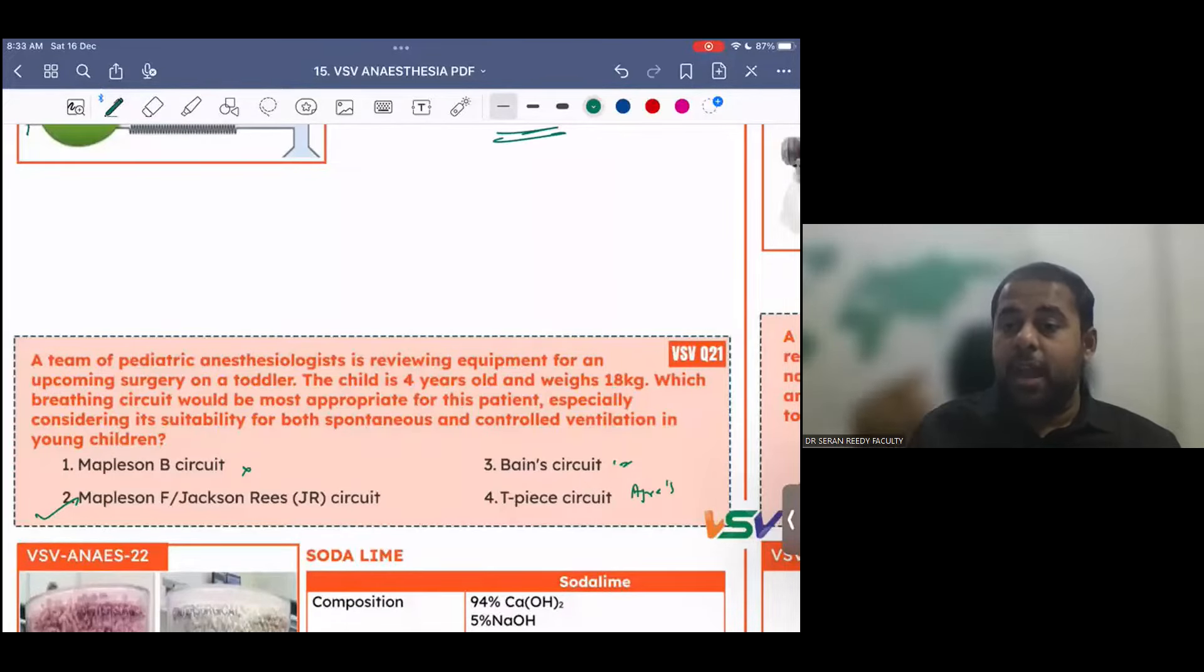Among ABCD, EF, ABCD are used in adults. EF are used in children. And among the ones which are popular, A and D in Mapleson A, and Mapleson D in adults, and Mapleson F in children. Mapleson A, best circuit for spontaneous ventilation in adults. Mapleson D, best circuit for controlled ventilation in adults. Mapleson F or Jackson Rees circuit, the best circuit for both spontaneous and controlled ventilation in children.